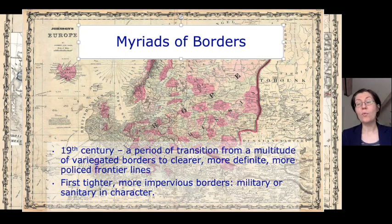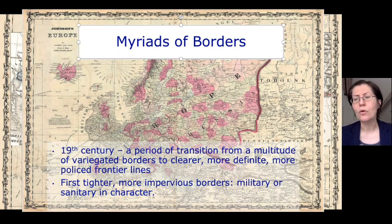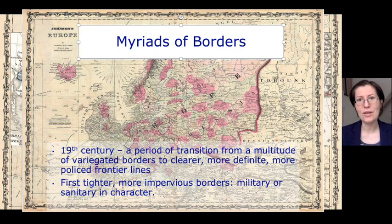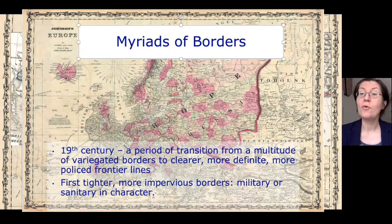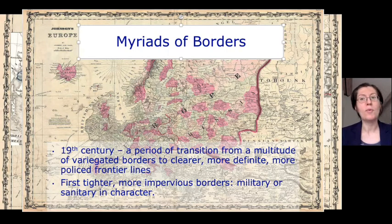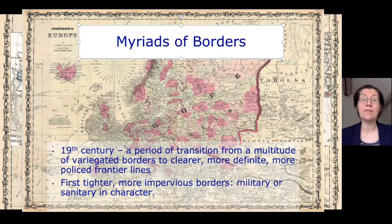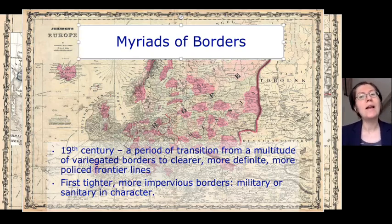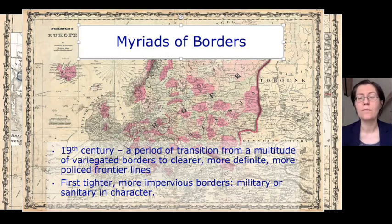Between the Napoleonic Wars and the First World War, Europe dramatically changed its internal borders. The 19th century saw a gradual transition from a multitude of variegated and rather fuzzy borders to clearer and more policed frontier lines.